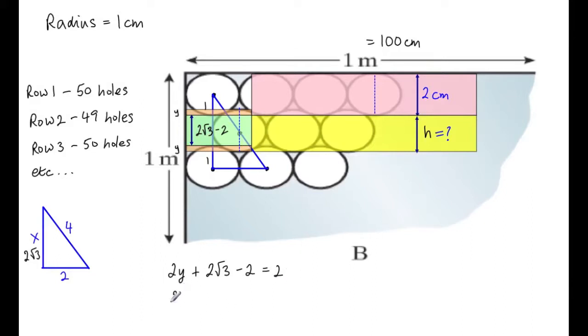So that tells us that two y plus two root three minus two is equal to one diameter which is two. So I'm neatening this up. I'm going to add two to both sides and take two root three from both sides. Now divide your answer by two and we have y is equal to two minus root three. So what's h? Well h is equal to the green plus one of the oranges which is two root three minus two plus two minus root three, and that's simply root three. So h is root three. Now that's the difficult part of the question solved.